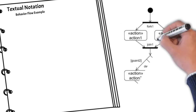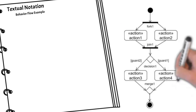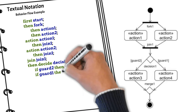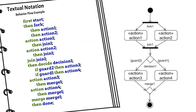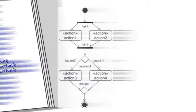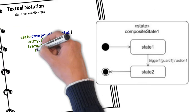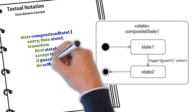Here is the second textual notation example which shows the behavioral flow. Pause the video if needed to review. This third example provides code for a simple state machine.